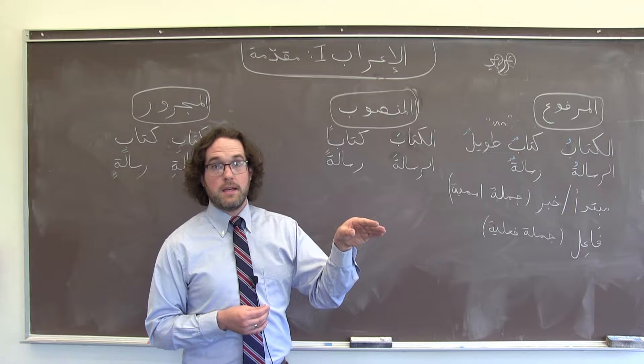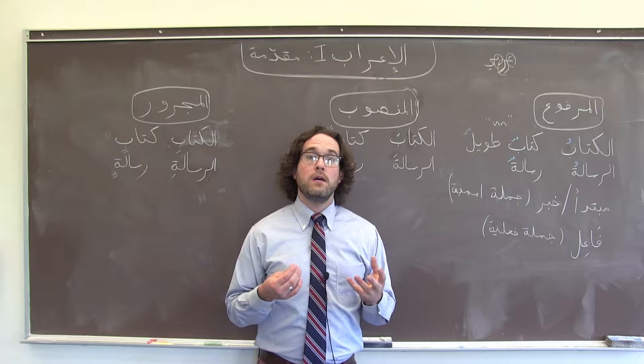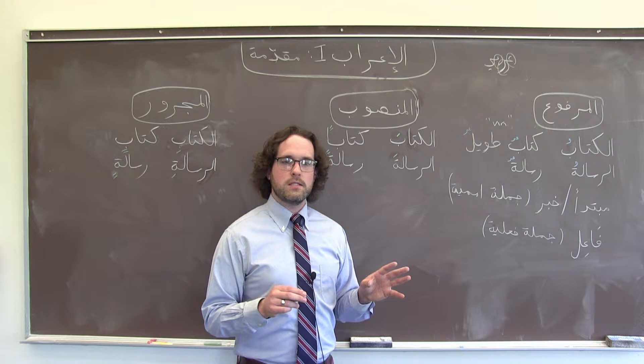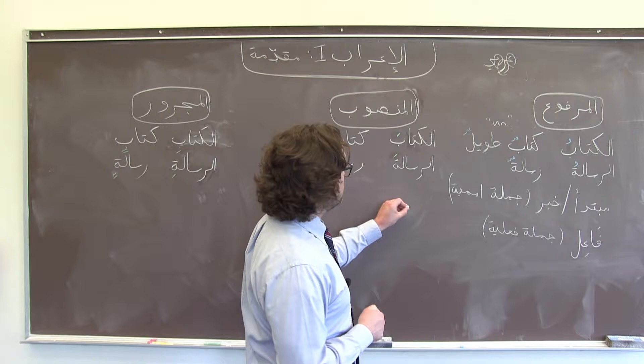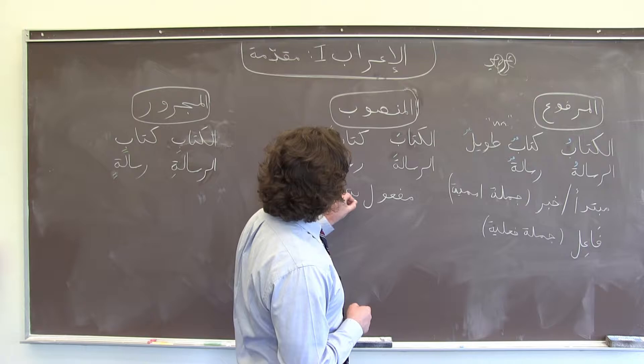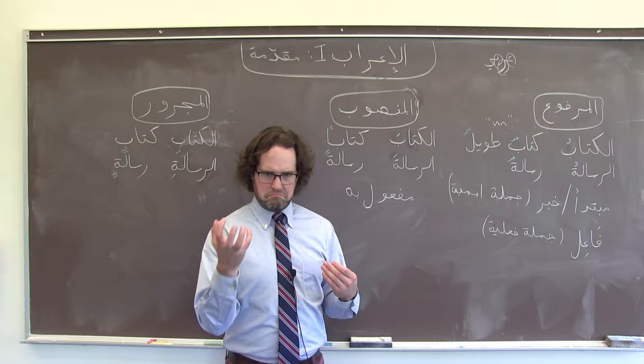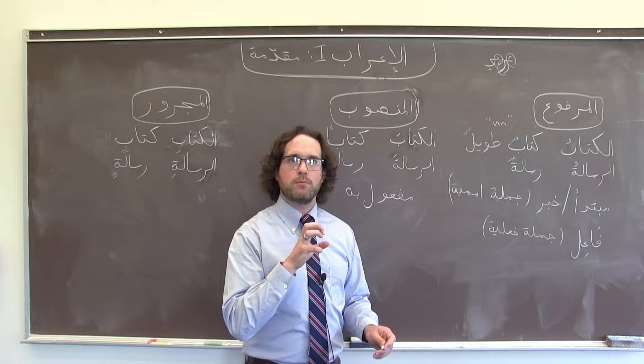منصوب is similar. If we have a verb that's in منصوب, often it takes a فتحة at the end in the present tense, and فتحة is how we typically mark a منصوب noun. منصوب occurs in a couple of different cases. The most common one is probably direct objects, what we call in Arabic مفعول به. So if I say 'I ate an apple,' 'an apple' is going to be منصوب — it's the direct object of the verb 'ate.'